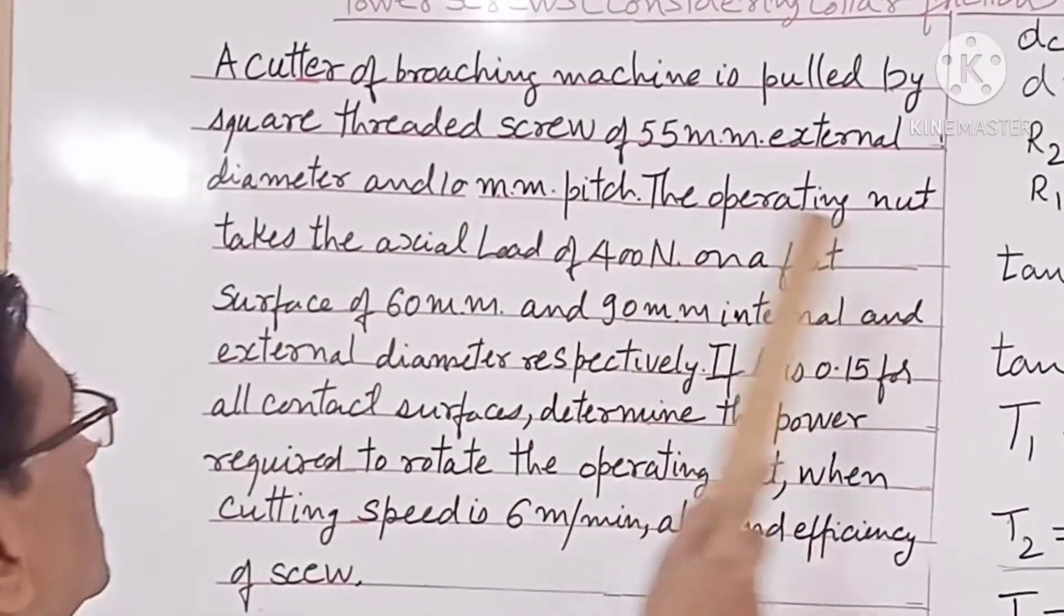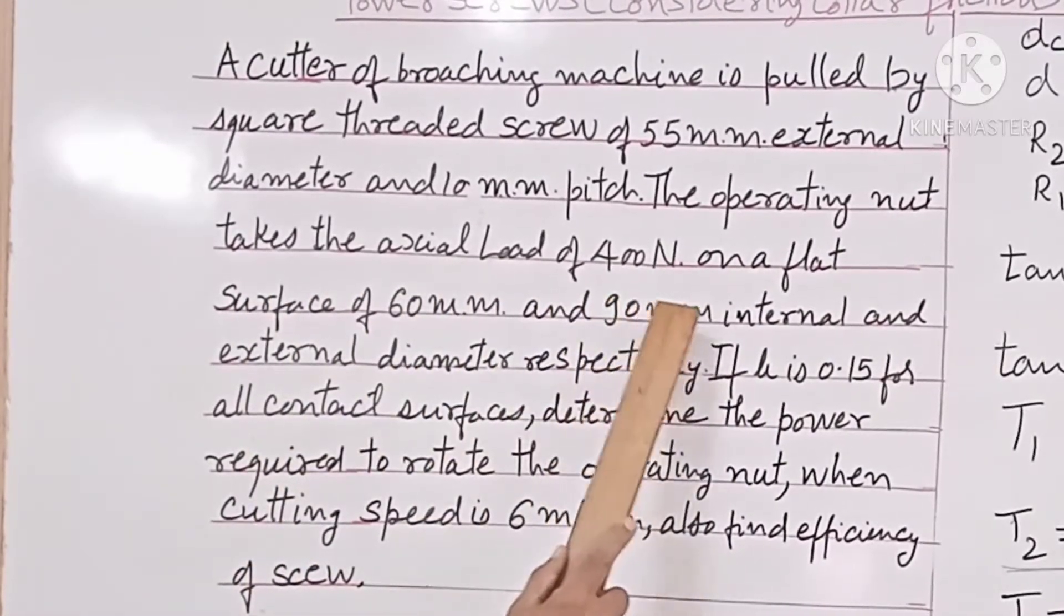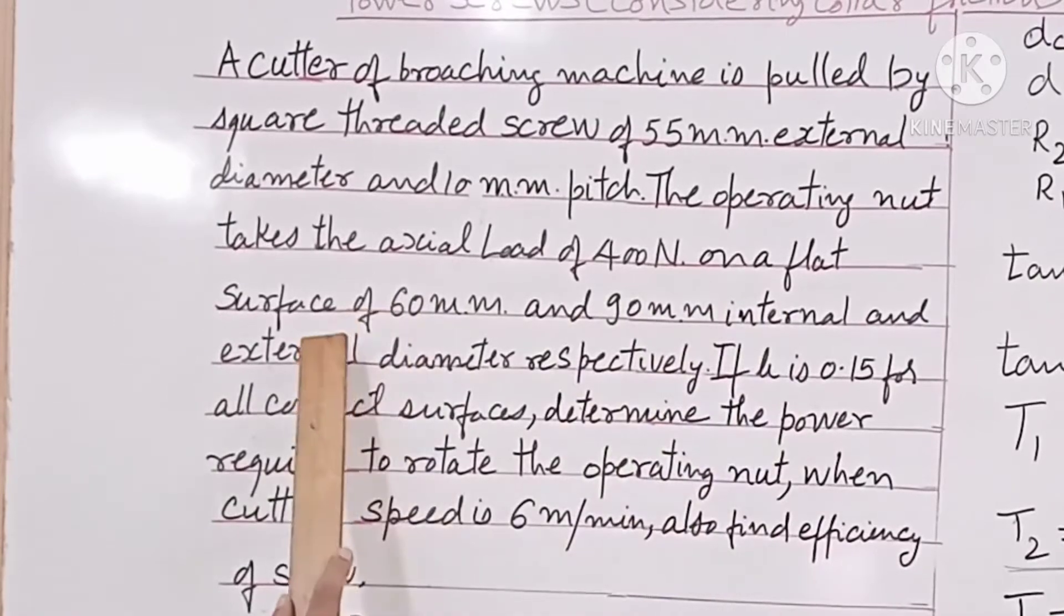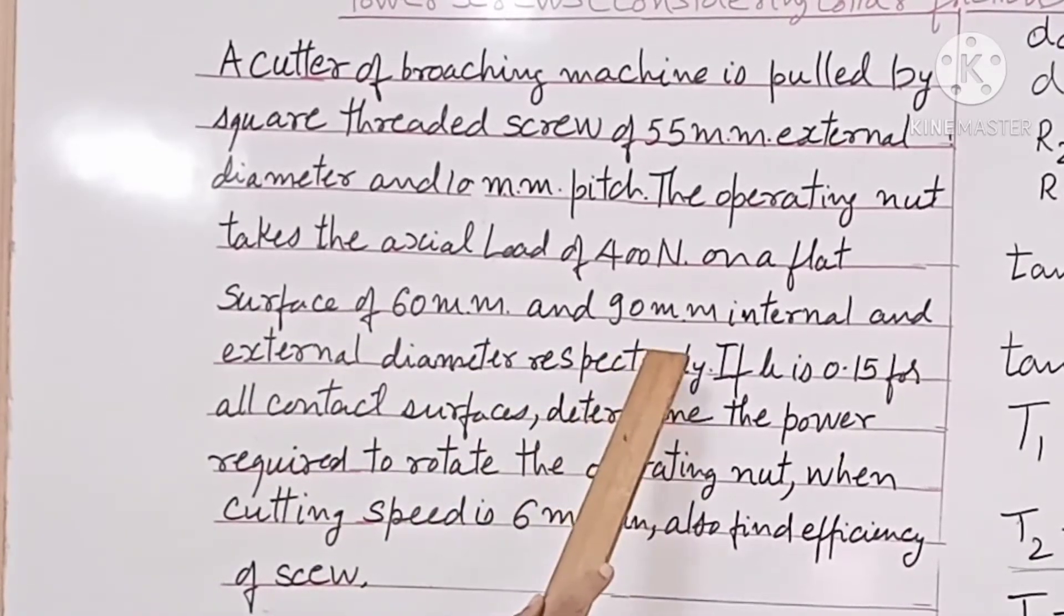The operating nut takes the axial load of 400 N on a flat surface of 60 mm and 90 mm internal and external diameter respectively.